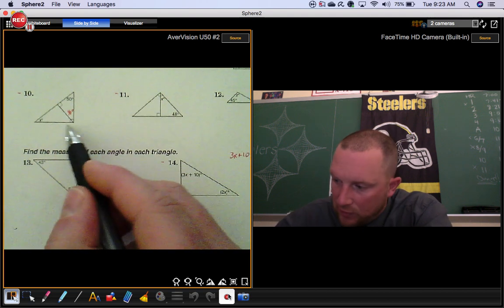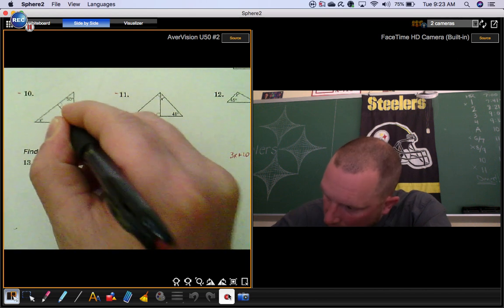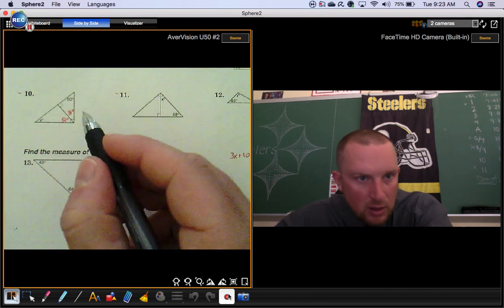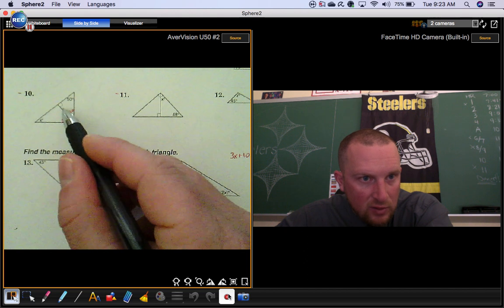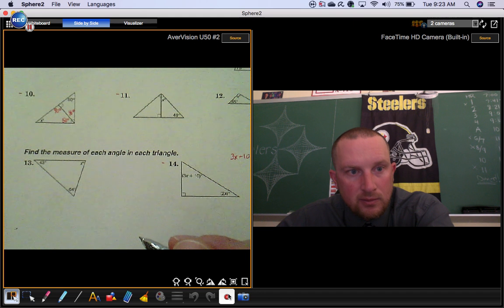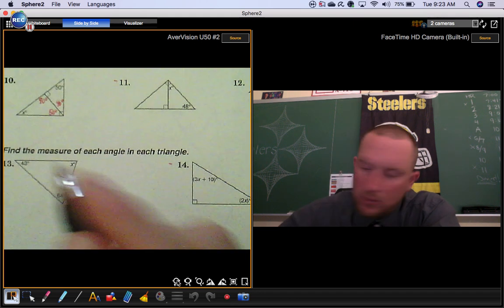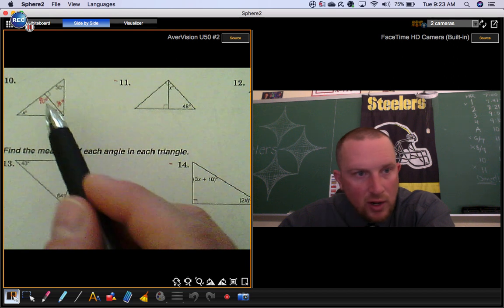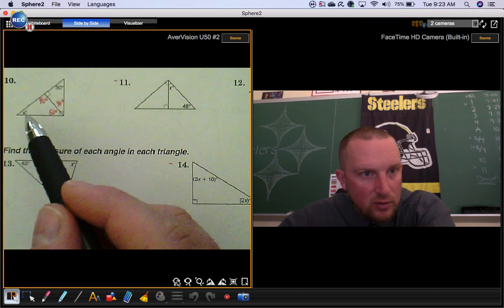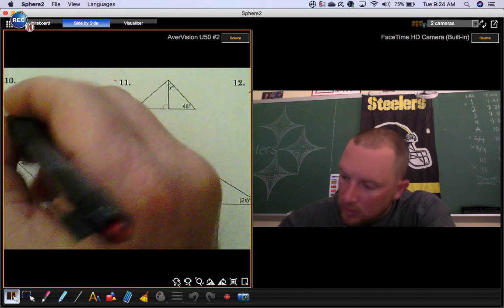And if that's 40, notice how this angle right here is 90. So that makes this angle 50. If this angle is 90, right, these two lines are perpendicular, doesn't that make this one 90? So now you have a right triangle where you have a 50 degree angle and the other acute angle must add with 50 to give you the remaining 90. So this one's 40.